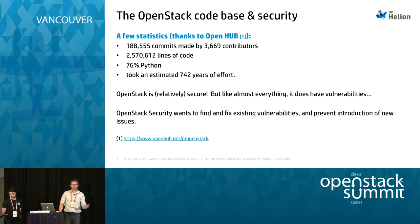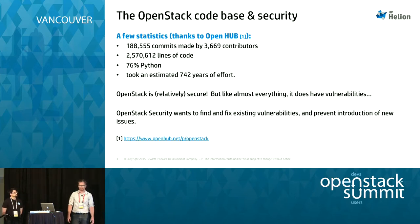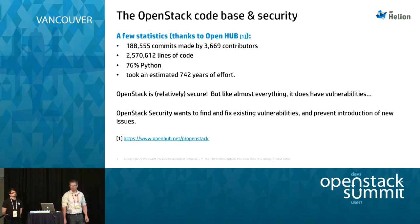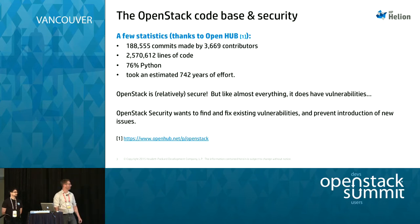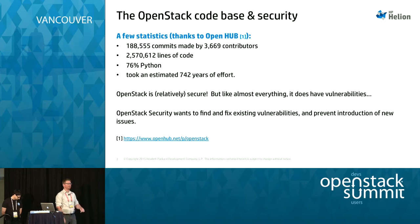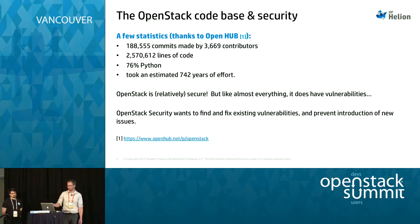Just a basic introduction: OpenStack is big. There are about 2.5 million lines of code, and about 76% of that is Python, according to OpenHub as of yesterday. It's relatively secure, but we in the OpenStack security project team want to find and fix vulnerabilities before anybody else does, and prevent the introduction of new security issues as well. The session after this one, Rob Clark's going to be presenting on the OpenStack security team, and Bandit is one of our initiatives.